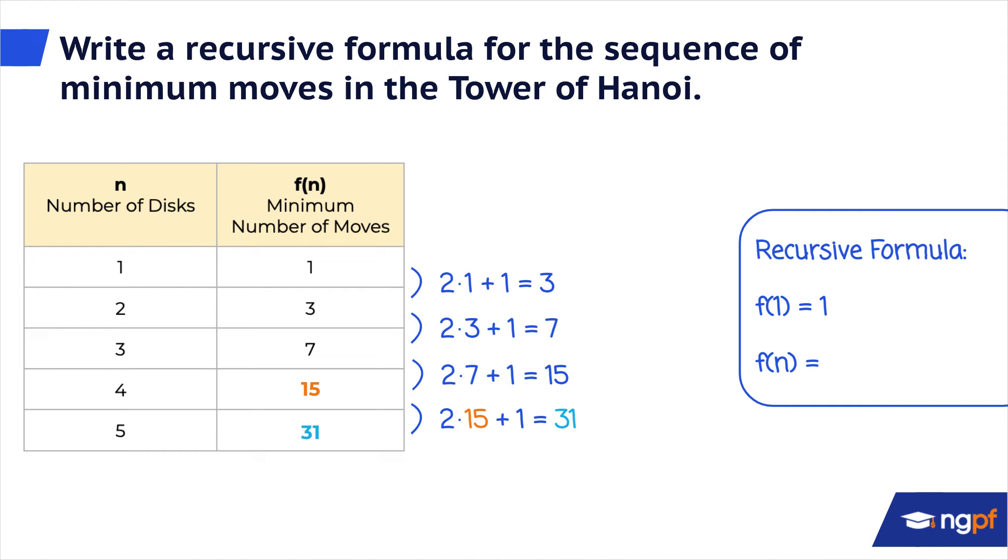The pattern continues. The fourth term is 15. 2 times 15 plus 1 gives us 31. That's the fifth term.